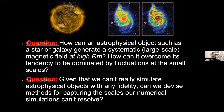The second question is: given that we can't really simulate astrophysical objects with any fidelity, can we devise methods for capturing the scales our numerical simulations can't resolve? We have a finite amount of computing power, we can only resolve a certain range of scales. The general question in astrophysical fluid dynamics is what's the best way of apportioning our resources and can we do something about the bits we're missing.